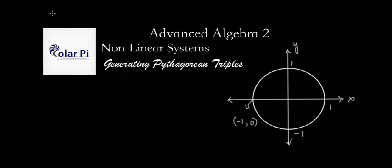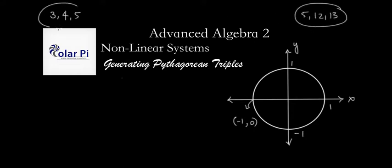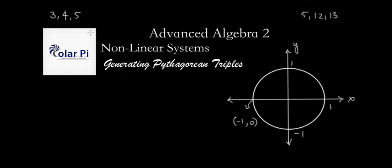Now, recall that 3, 4, 5 is a base Pythagorean triple, as is 5, 12, 13. And you can start with these and multiply either one by a fixed number and get another Pythagorean triple. So you can generate Pythagorean triples — infinitely many of them — by starting with these two base Pythagorean triples.